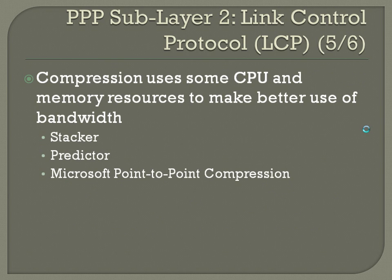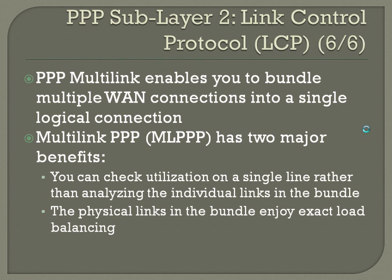Compression uses some CPU and memory resources to make better use of bandwidth. The three main types you need to be familiar with are Stacker, Predictor, and Microsoft Point-to-Point Compression. PPP multi-link, or MLPPP, enables you to bundle multiple WAN connections into a single logical connection. It has two major benefits: you can check utilization on a single logical link rather than analyzing individual links, and the physical links in the bundle enjoy exact load balancing — meaning frames are even broken up to distribute the exact number of bits across each link.